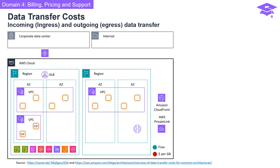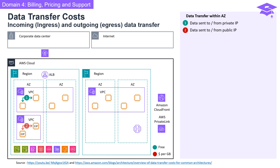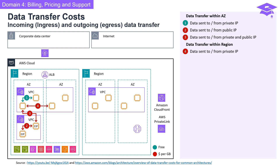Data transfer charges are often overlooked while architecting a solution in AWS. Considering data transfer charges while making architectural decisions can help save costs. The diagram shows various data transfer scenarios such as data transfer within an availability zone, data transfer within a region, and data transfer out from a region. There is no charge for data sent to or from a private IP address within a region or within an availability zone.